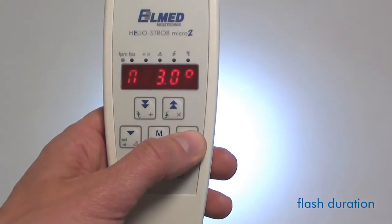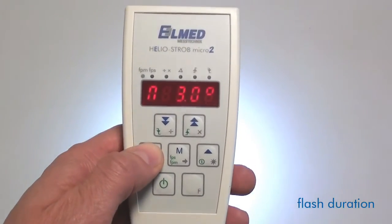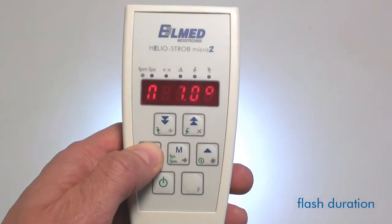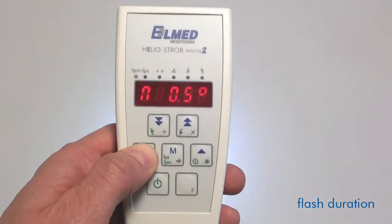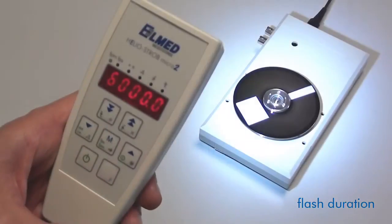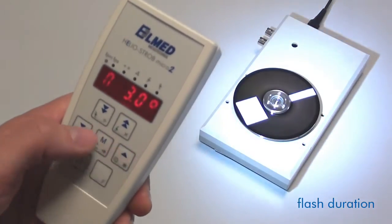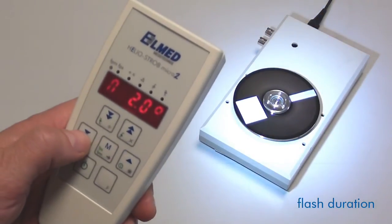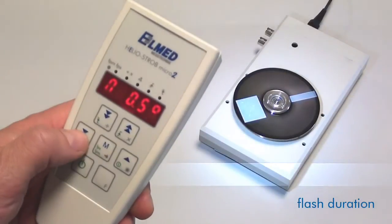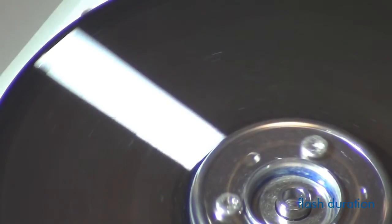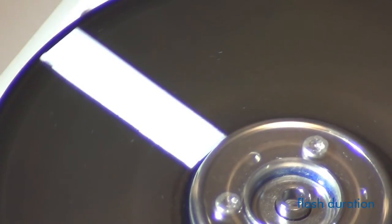By choosing the correct flash duration, you can define the optimum balance between brightness and sharpness. Values in the range of 1 microsecond and 100 microseconds, respectively 0.5 degrees and 3 degrees, are possible. The longer the flash duration, the brighter the flash light. However, the motion's blur increases at the same time. As a conclusion, the shorter the adjusted flash duration, the sharper the picture.